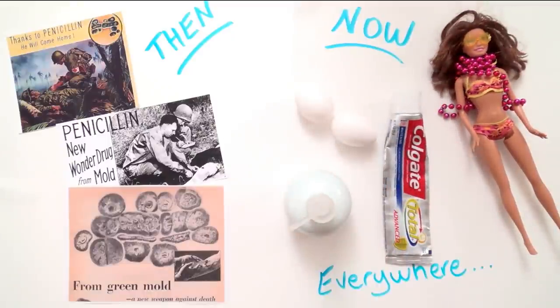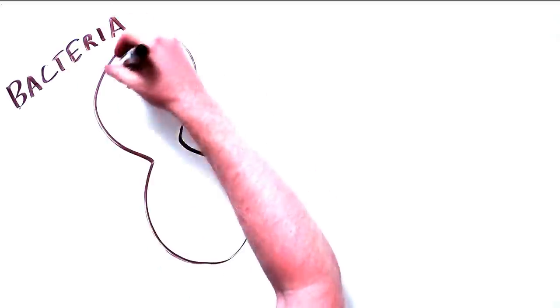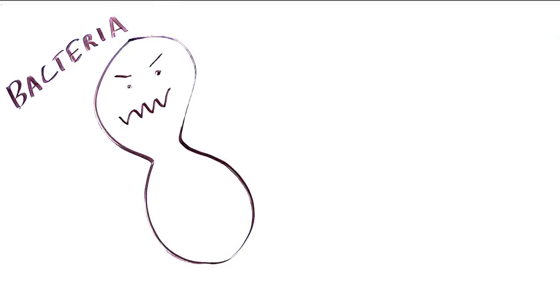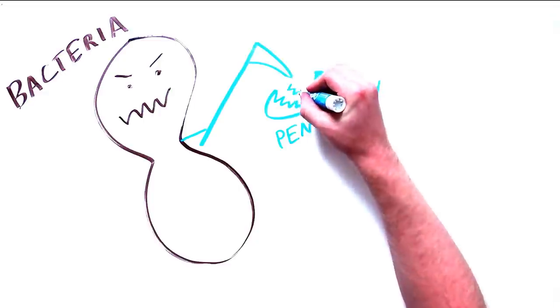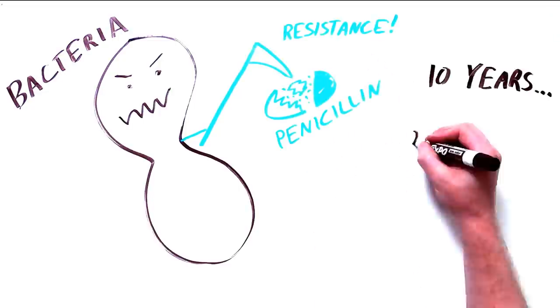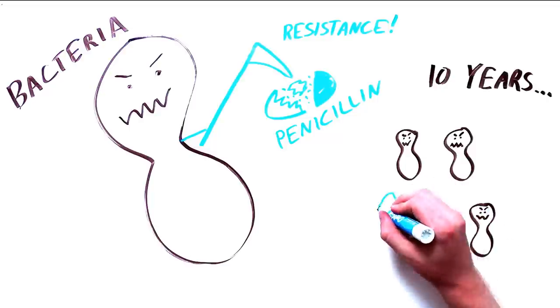Around the same time as penicillin was isolated, scientists had their first encounter with antibiotic resistance. A bacteria was discovered that could destroy the new wonder drug. Within ten years, penicillin resistance was widespread.